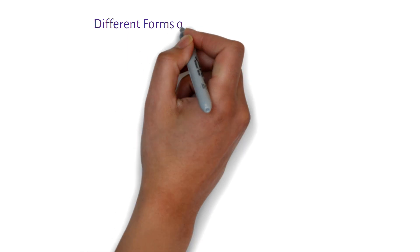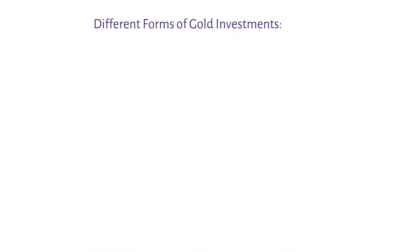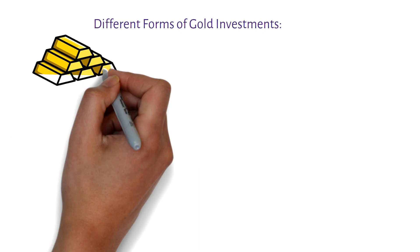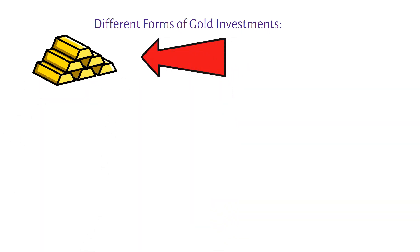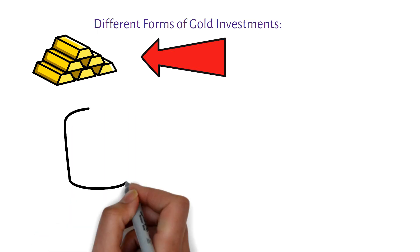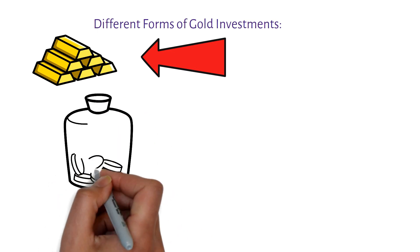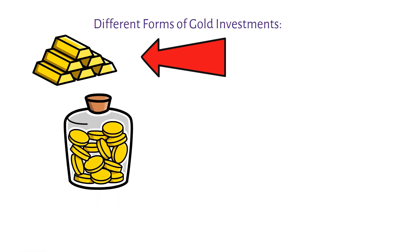Different forms of gold investments. There are various ways to invest in gold, each with its own benefits and considerations. Physical gold: this involves purchasing gold bullion bars, coins, or jewelry. Owning physical gold provides you with tangible assets that you can store securely or access when needed.